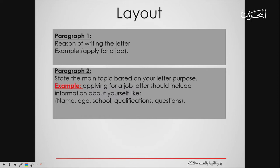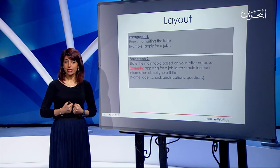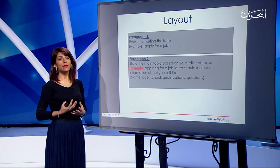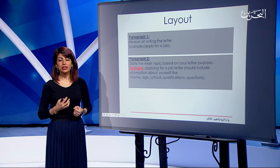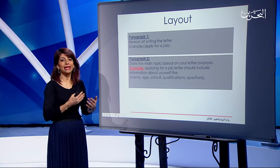If you are writing a formal letter to apply for a job, you have to include information about yourself in the body — like your name, your age, school qualifications, certificates, and any questions you have. But let's assume this letter was written for the purpose of a complaint letter — are you going to mention all of these details? No, you will just start with the main thing which is the complaint purpose.